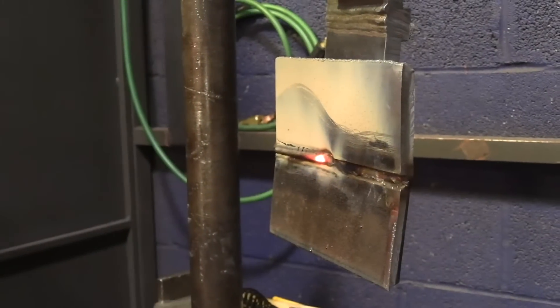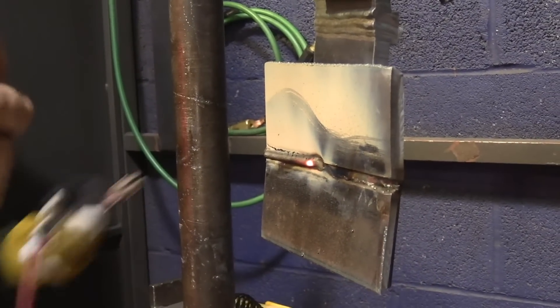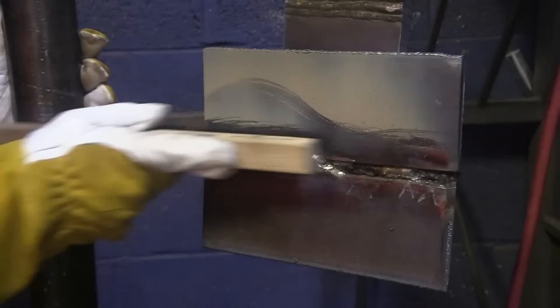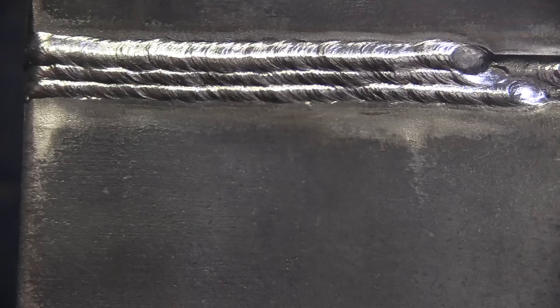There you have it. 3/32nd, 7018 fill and cap, kind of stacked in there, not finished out, just so you can see how the beads are staggered and laid in there. This absolutely could have been done with 1/8th, 7018. We just chose to go with 3/32, maybe leaving room for another video on another day using 1/8th rod.